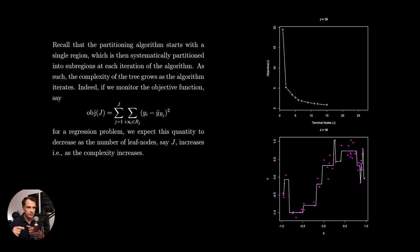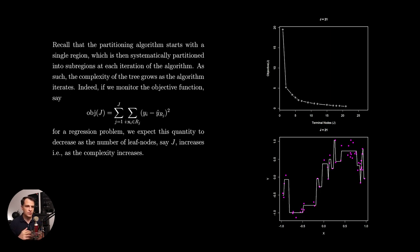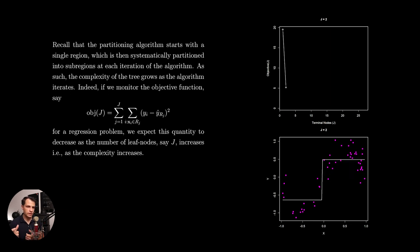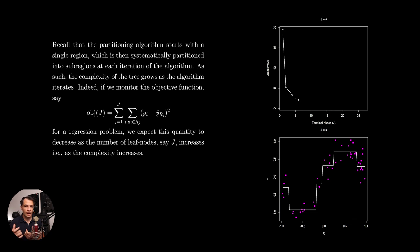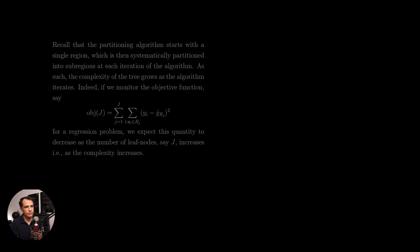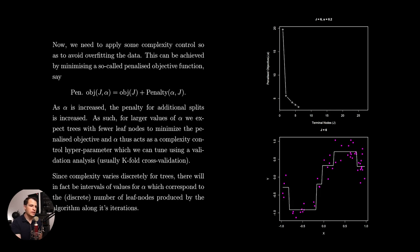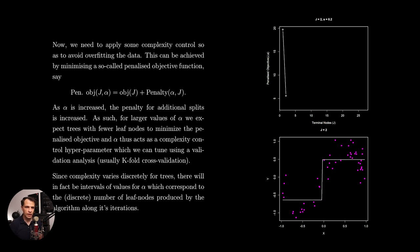As such, the complexity of the tree grows as the algorithm iterates. If we monitor the objective function — say in the case of a regression problem, we set the objective function as simply the sum of the squared differences between predicted and observed responses — then we expect this quantity to decrease as the number of leaf nodes j increases, i.e. as complexity increases. We obviously need to include some complexity control so as to avoid overfitting the data.